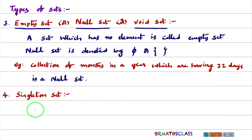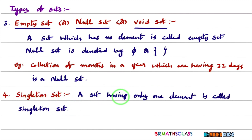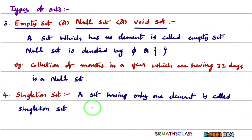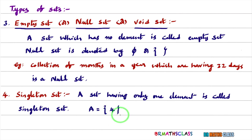The fourth type in these sets is singleton set. What is singleton set? A set which is having only one element is called singleton set. For example, consider a set having only one element — we say that this set is a singleton set because it is having only one element.